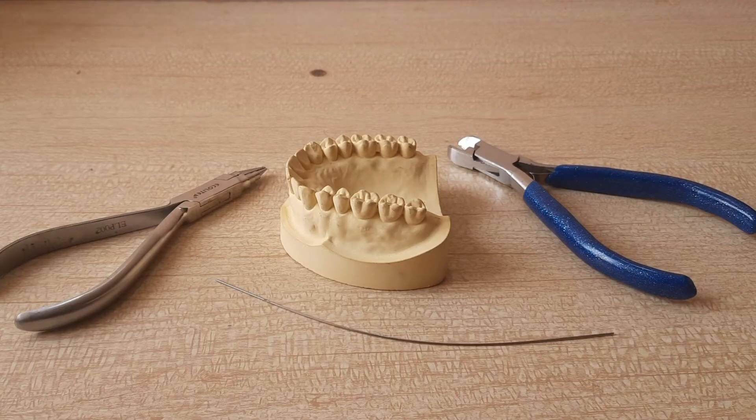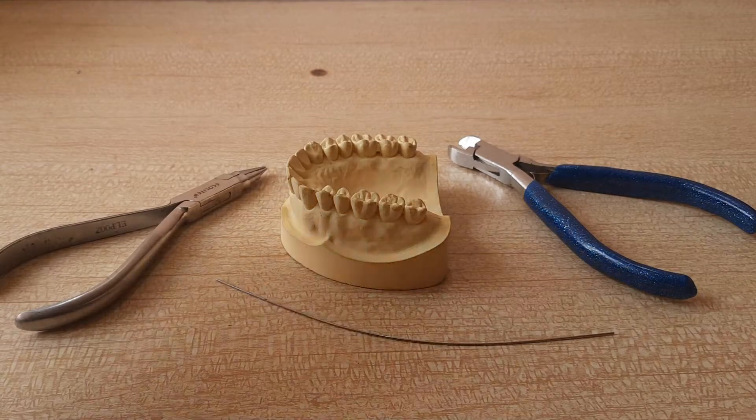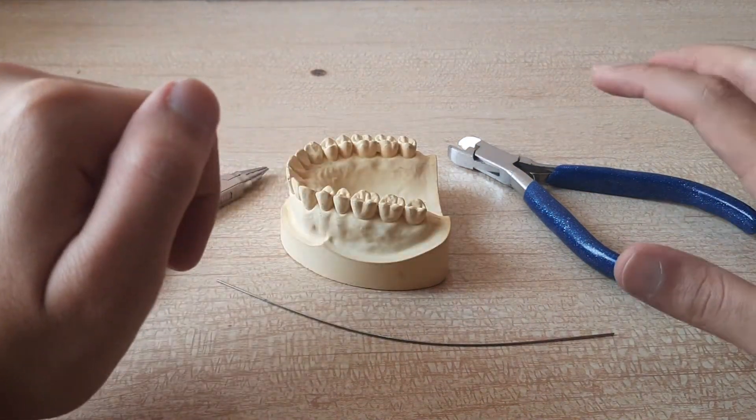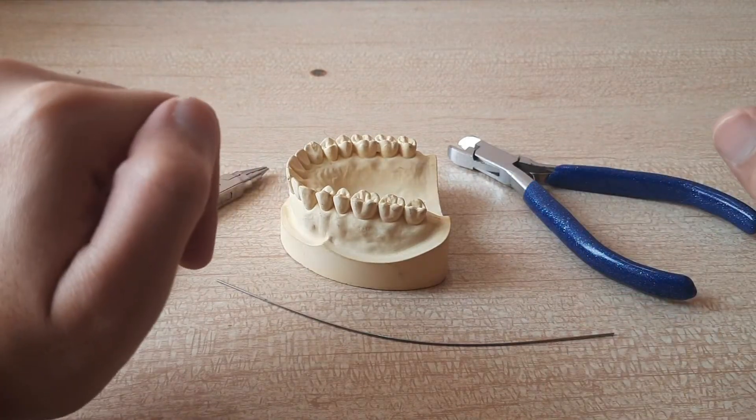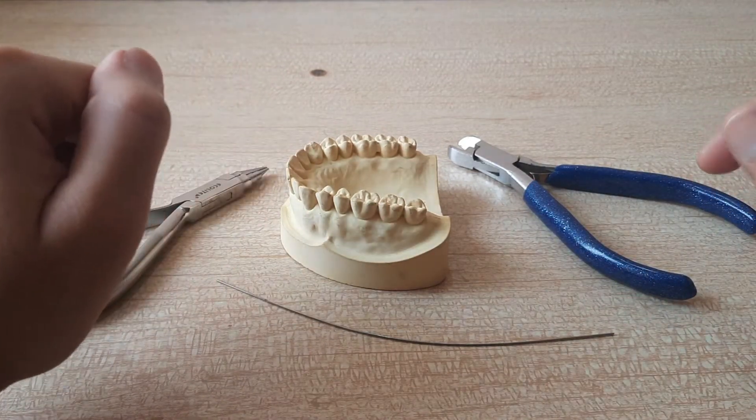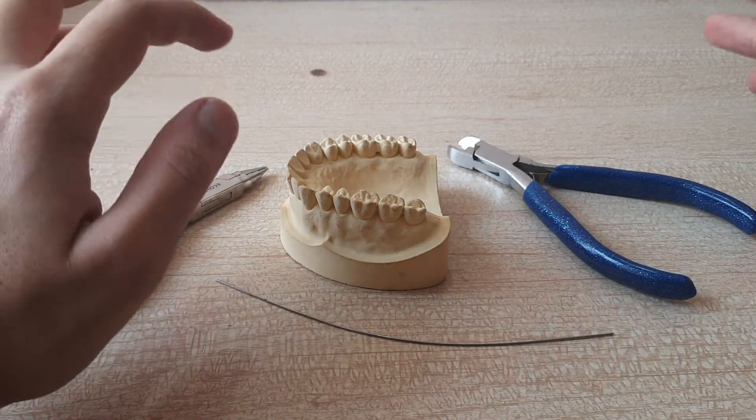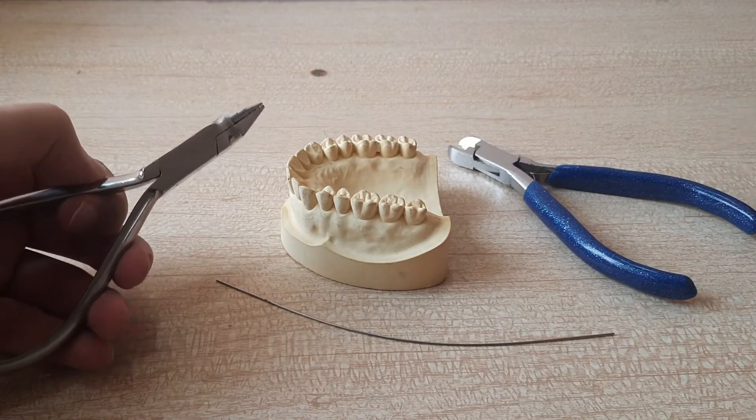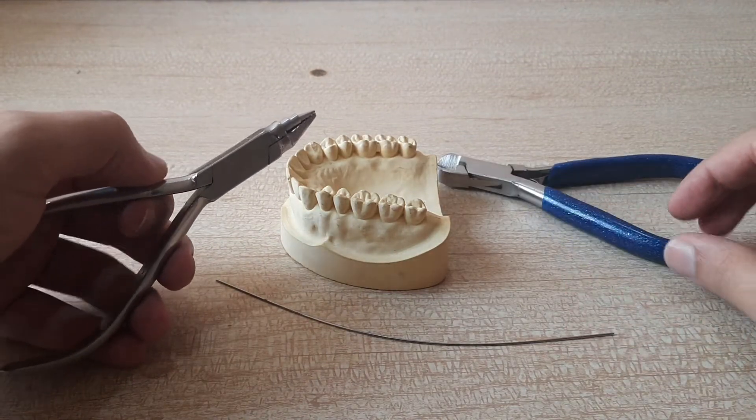So let's start with the making of an Adam's clasp. The things which you need are universal plier, a cast, a cutter and the wire. Now a few people also use the Adam's plier but I don't feel that there is much requirement of an Adam's plier. You can use the universal plier itself and you can make a decent Adam's clasp with that.